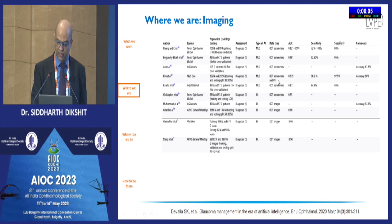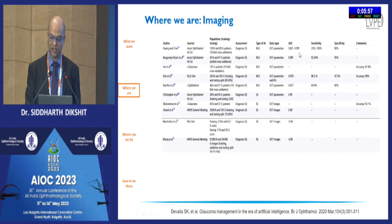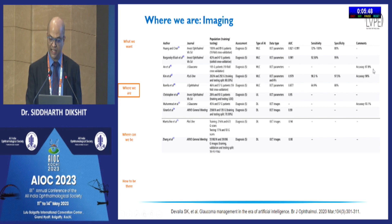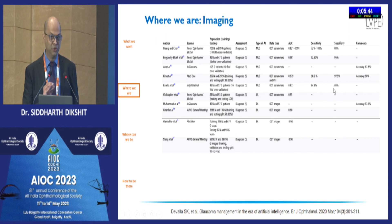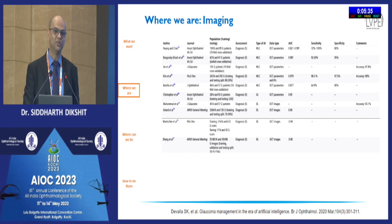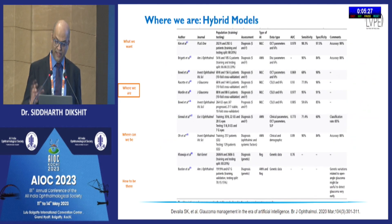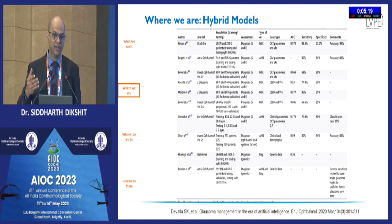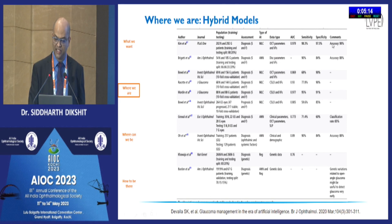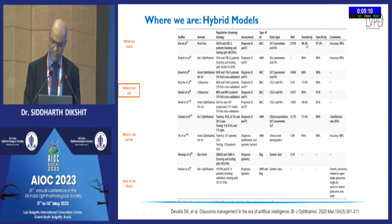Similar data on optical coherence tomography suggests slightly variable but still good correlation — good sensitivity and specificity for picking up glaucoma with accuracy ranging 90% or more. Specificity in OCT is a known problem, so AI for OCT also does not have very good specificity because OCT itself does not. When they start looking at multiple modalities — disc parameters and visual fields, or OCT and visual fields — accuracy improves. In some studies, accuracies are as good as 98%, with improvement in sensitivity and specificity for most studies.